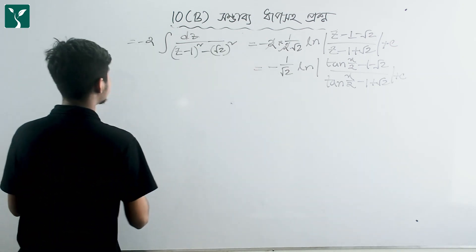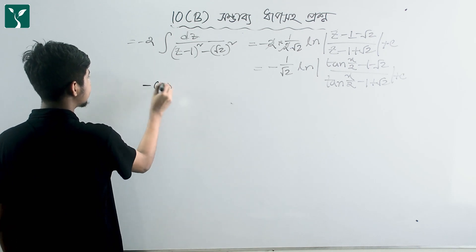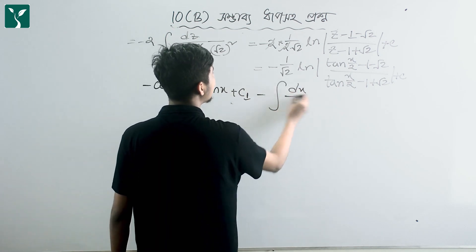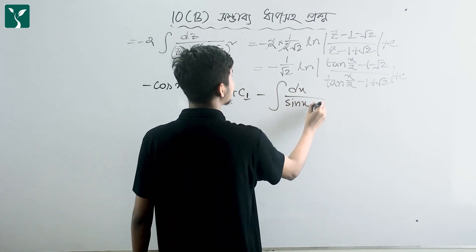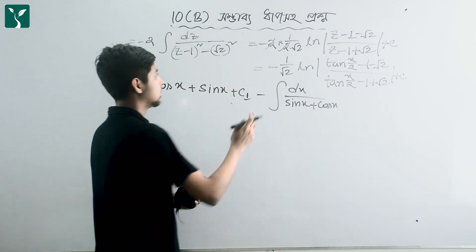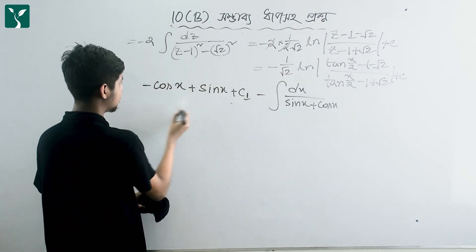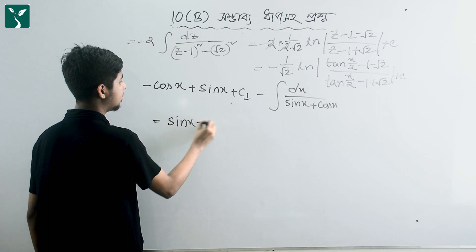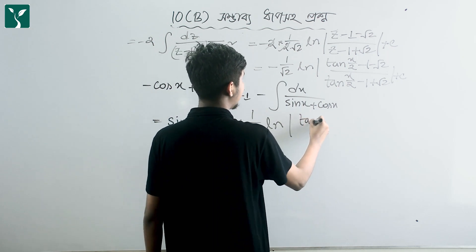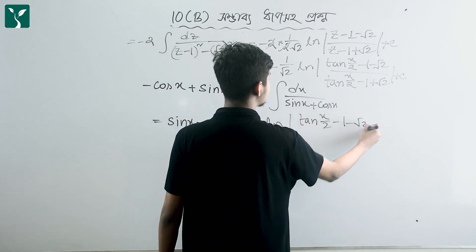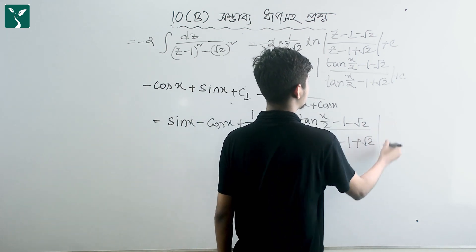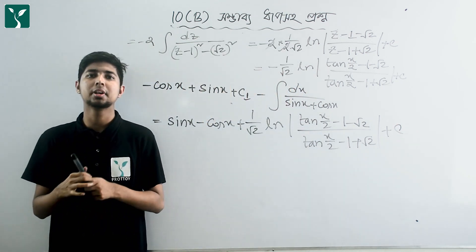So the final answer is: sin x minus cos x minus 1 by root 2 times ln of tan x by 2 minus 1 minus root 2, divided by tan x by 2 minus 1 plus root 2, plus c. And that is the problem and solution.